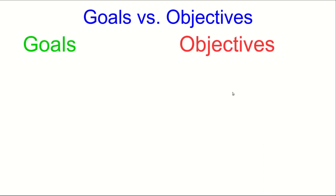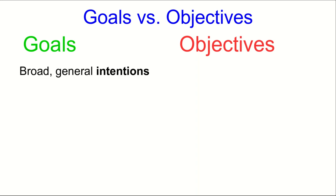In everyday speech we tend to use the words goals and objectives to mean more or less the same thing, but in course design there's a distinction made between these two terms, and the distinction is useful. Goals are broad and general; objectives are precise and achievable, and they're about action, whereas goals are intentions.